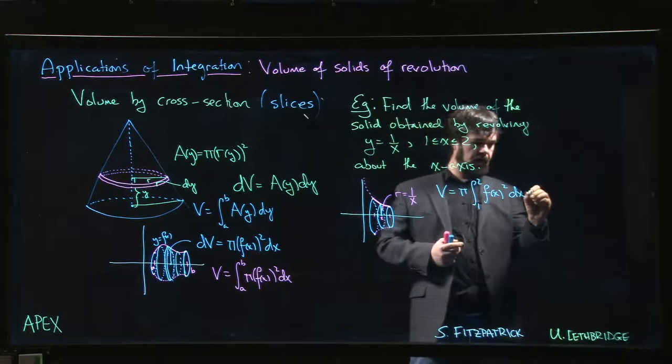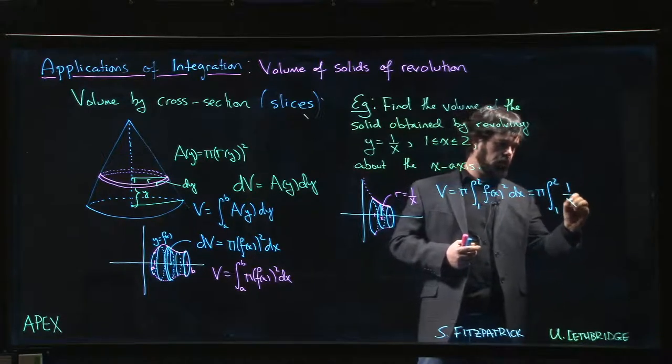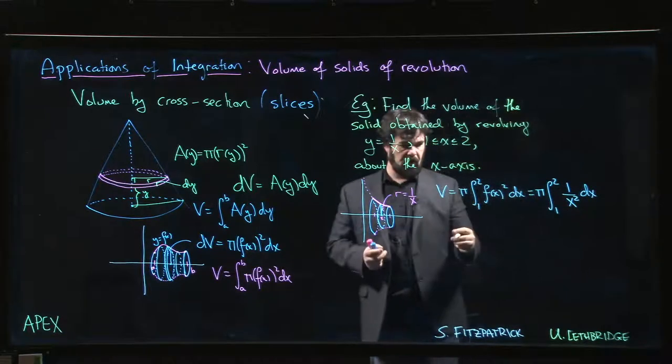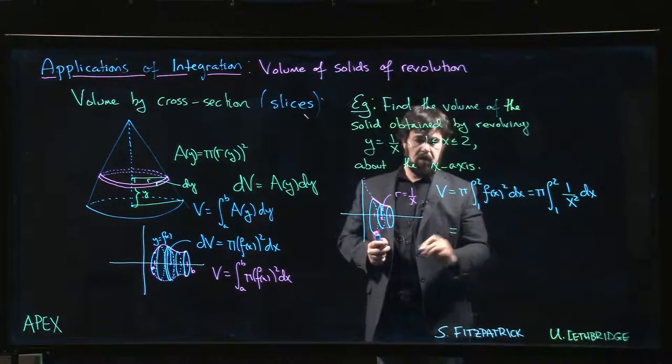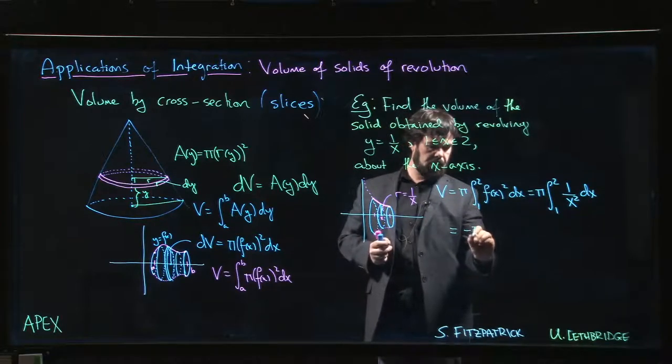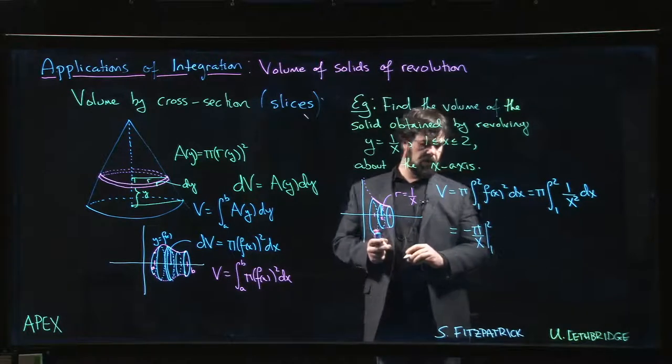So we have pi times the integral from 1 to 2, 1 over x squared dx. So that's x to the minus 2. Power rule gives us an antiderivative for that. Minus pi over x. We're evaluating from 1 to 2.